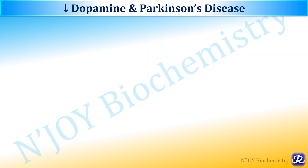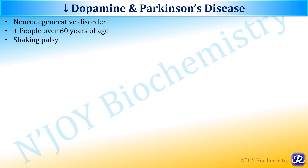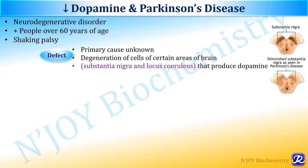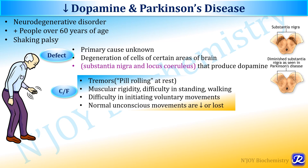Decreased levels of dopamine are associated with the neurodegenerative disorder Parkinson's disease, commonly seen in people over 60 years of age. It is also called shaking palsy. The primary cause is not known, but it is believed to be due to degeneration of cells in certain areas of the brain like the substantia nigra and locus ceruleus, where dopamine is formed. In patients with Parkinson's disease, the substantia nigra is diminished and there is decreased production of dopamine.